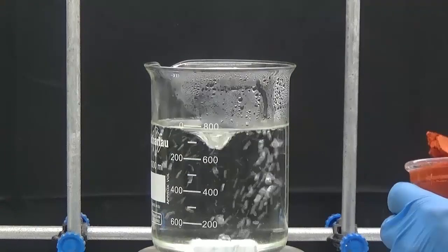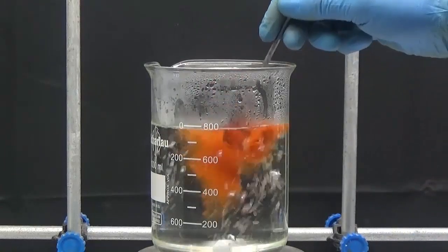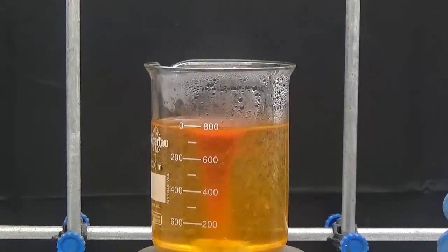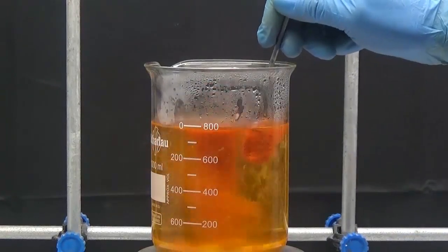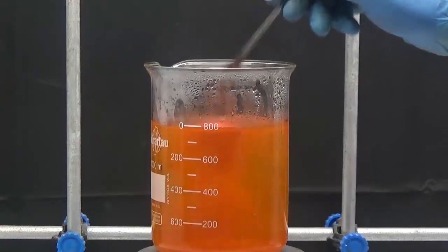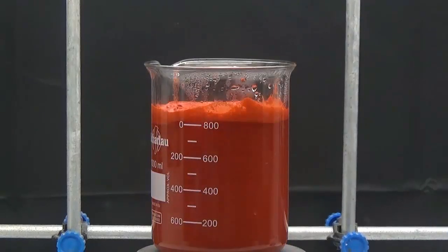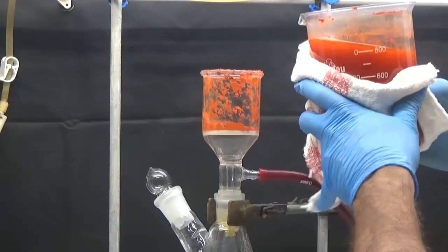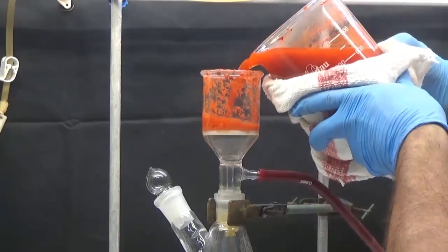The obtained solid is dispersed in 800 ml of boiling water to eliminate the phthalic anhydride. Without cooling, collect the solid by filtering by vacuum aspiration.